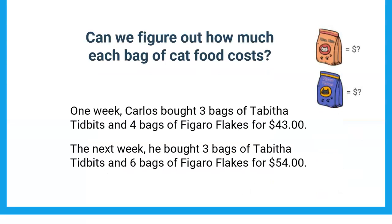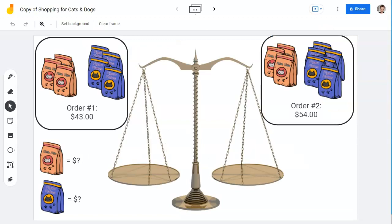Here we have one of these orders with two different kinds of cat food. One week Carlos bought three bags of Tabitha Tidbits and four bags of Figaro Flakes for $43. And the next week he bought three bags of Tabitha Tidbits and six bags of Figaro Flakes for $54. We've got an interactive Jamboard we can use — I'll put a link in the video as well as in class. The orders show three Tabitha Tidbits and four Figaro Flakes for $43 total.